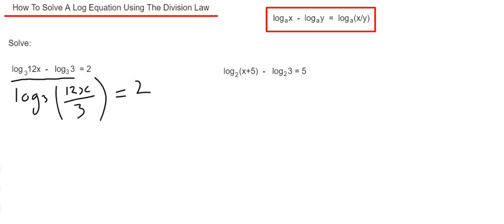We can simplify this by doing 12x divided by 3, so that will give us 4x. Once we've got this far, we now need to write this in exponential form. We do this by starting off with 3, so 3 to the power of this 2 here equals 4x.